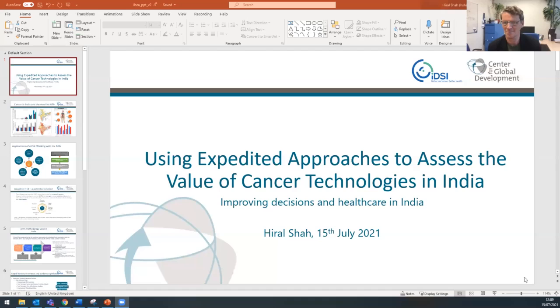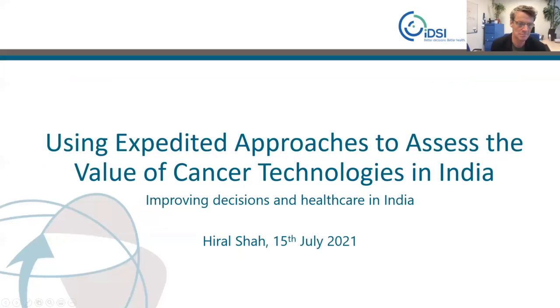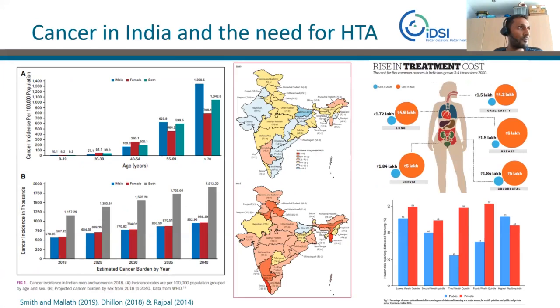The second presentation is on work in India by Dr. Hiral Shah, Senior Policy Analyst from the Centre for Global Development and International Decision Support Initiative. Cancer is becoming a growing burden in India — the incidence is increasing across all states, and there's been a rise in treatment costs with almost three to four times increased cost for the five common cancers. This is against a backdrop where India is trying to achieve universal health coverage, with an ambitious social insurance scheme looking to provide health care insurance for over 40% of its population.